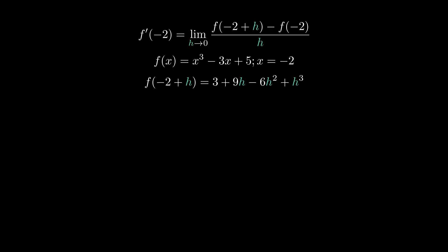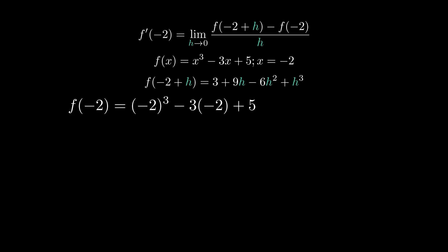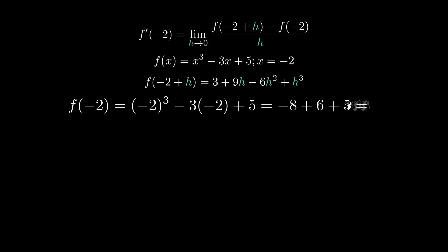The next step is we're going to evaluate what f of negative 2 is. We're just going to plug in negative 2 into our function. When we do that, that'll give us negative 2 cubed minus 3 times negative 2 plus 5. Negative 2 cubed is negative 8, and negative 3 times negative 2 is positive 6, and then we just have that plus 5. So negative 8 plus 6 is negative 2, and negative 2 plus 5 is 3. So we get f of negative 2 equals 3.